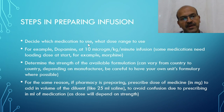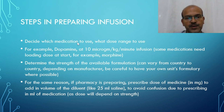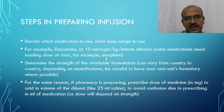In terms of preparing the infusion, we have to decide which medication to use and what dose range to use. For example, dopamine at 10 micrograms per kilogram per minute is a plan to start. Some medications like morphine or midazolam may need a loading dose at the start so that the effect is appropriate.